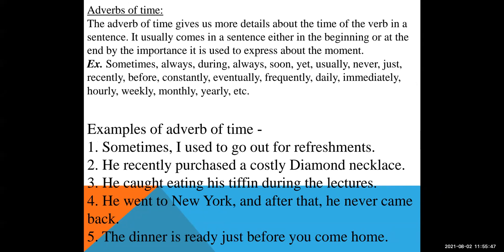Adverb of time gives the detail about the time of the verb in a sentence. For example: sometimes, always, during, soon, yet, usually, never, just, recently, before, constantly, eventually, frequently, daily, immediately, hourly, weekly, monthly. These words describe the time of the action. For example, 'he drives a car once in a week' — here 'once' is your adverb of time.